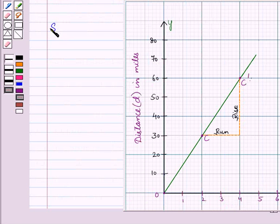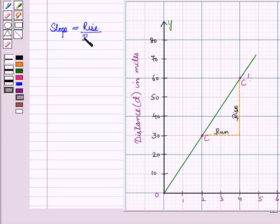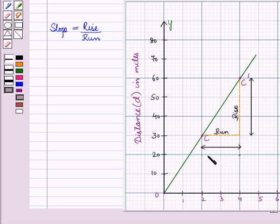Now we know that slope is equal to rise upon run. On the horizontal axis 1 unit equals 1 hour, so here run is equal to 2 units which is equal to 2 hours.